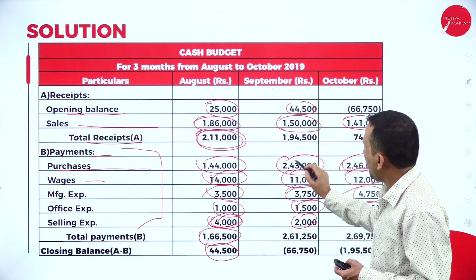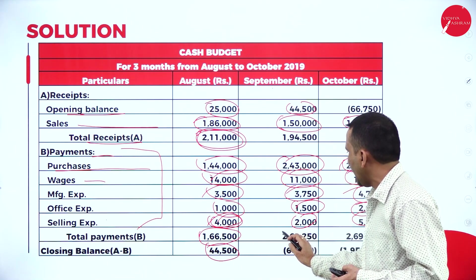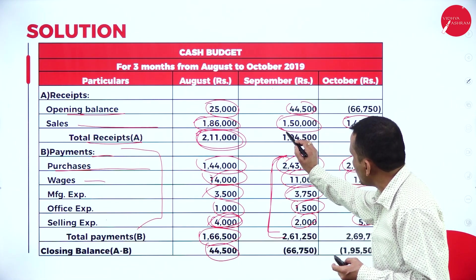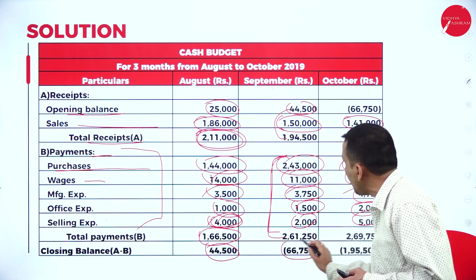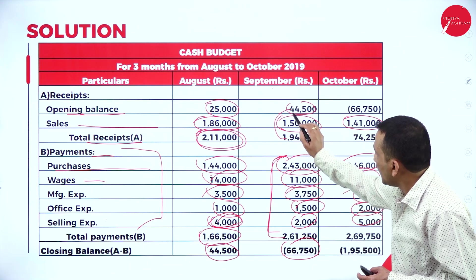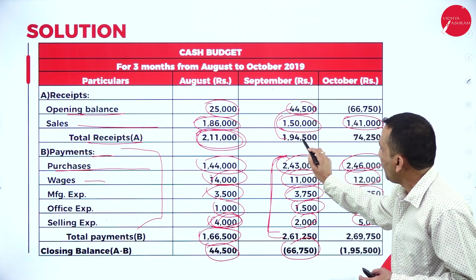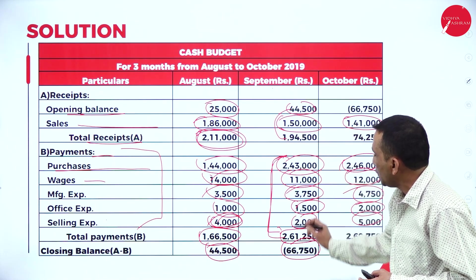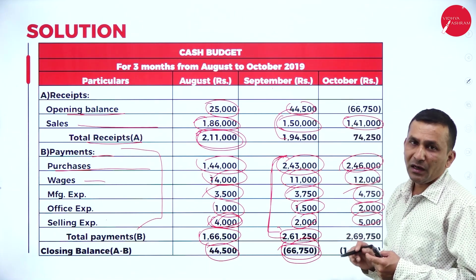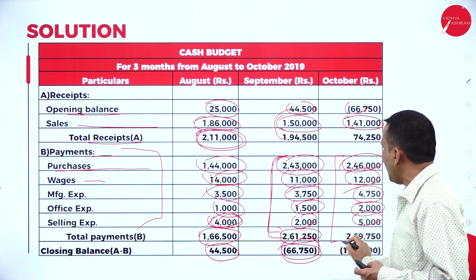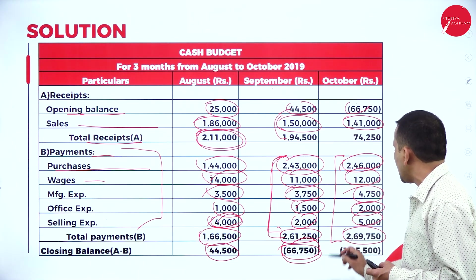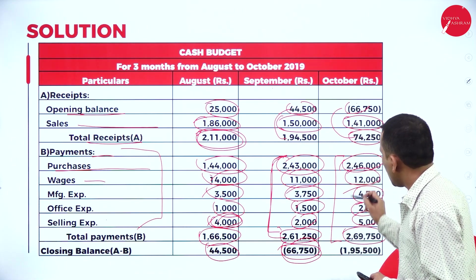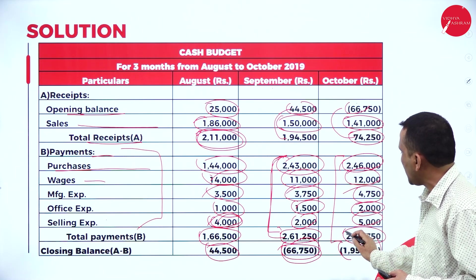For September: opening balance 44,500 plus receipt of 1,09,400 gives a subtotal of approximately 94,500 against total expenditure of 2,61,250 — resulting in a negative balance, which carries forward to October as a negative opening balance. For October: the payment side total is 2,69,750, and the resulting difference is also negative at approximately 74,250. The negative balance indicates expenditure consistently exceeds receipts — which justifies the company's need for an overdraft facility from the banker.